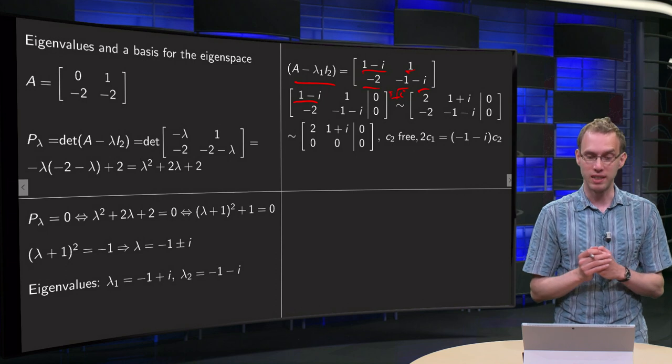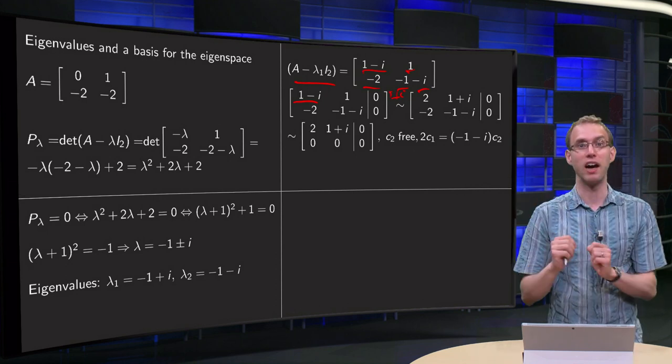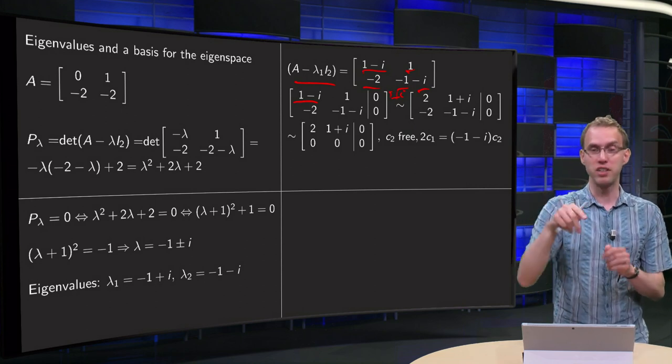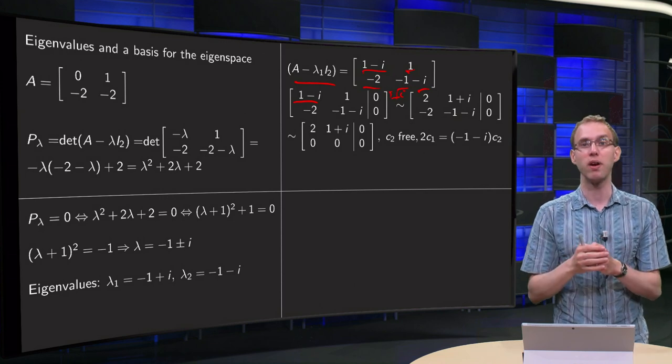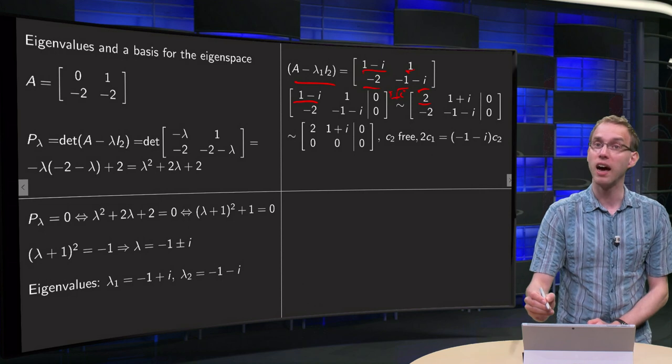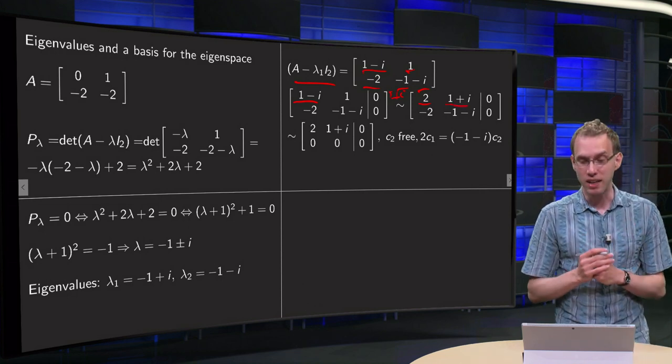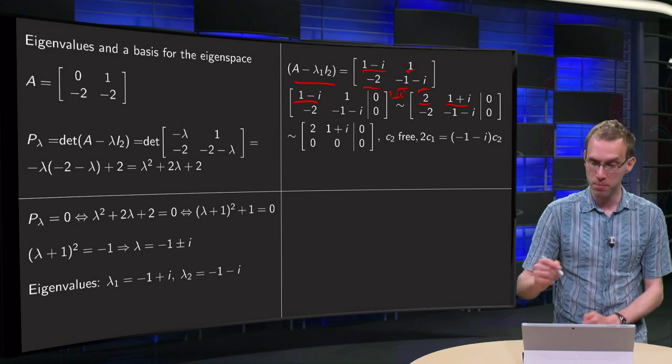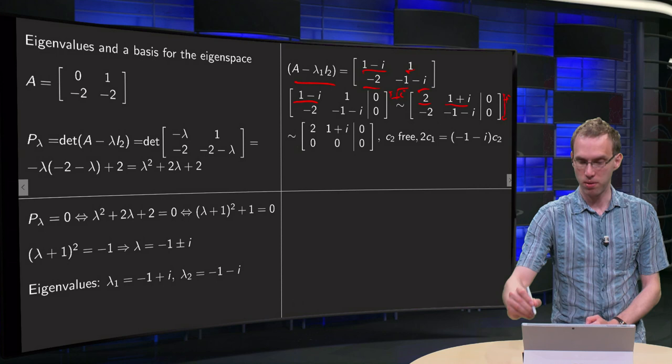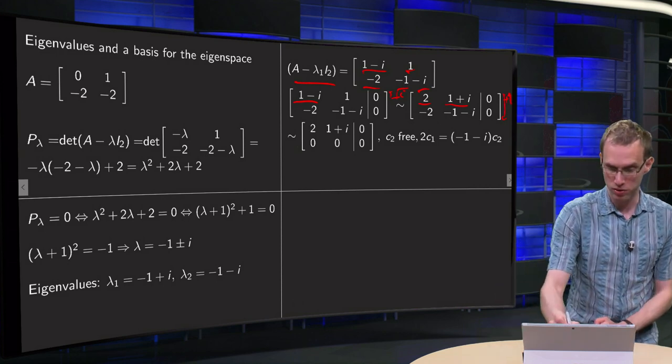Because what do we get then? On the first element we get 1 minus i times 1 plus i, but 1 minus i times 1 plus i is 1 plus i minus i, those cancel out, minus i squared, so 1 plus 1 equals 2. So then we get a 2 over here, and the second element is easy, it's just 1 plus i. And then we see again the first and second row are the same, so the second row disappears. We get a row of zeros.